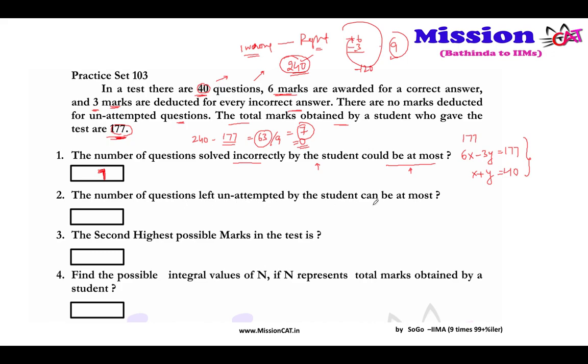Number of questions left unattempted by the student can be at most. See, I need to make 177 as the score. So 174 can be made by 29 right questions, 29 right questions will give me 174, and if I need 177, I will have one question right and one question wrong. So 2 questions will go in getting these 3 marks. So my answer should be 177. So 29, 30, 31, so how many questions are left unattempted? 9 questions can be left unattempted with this approach.